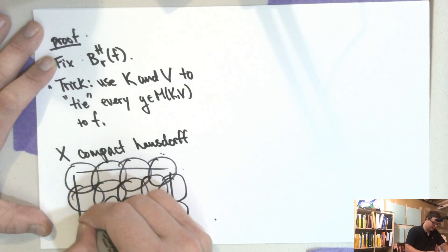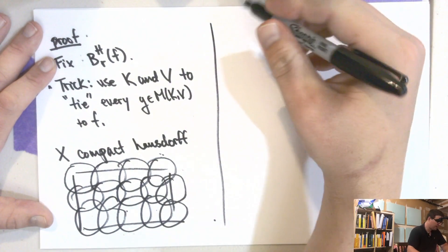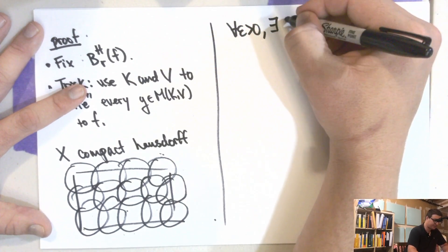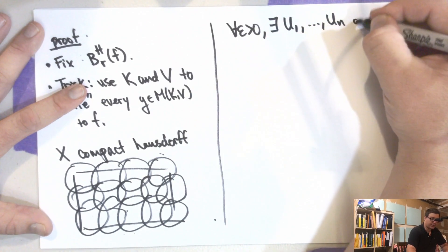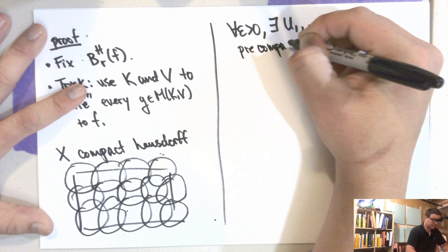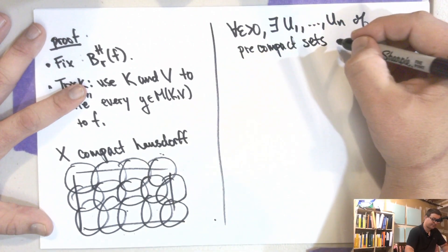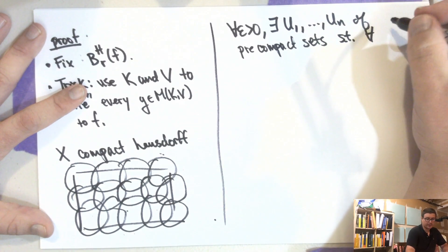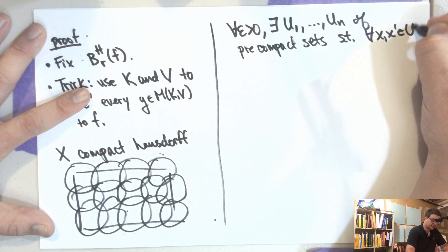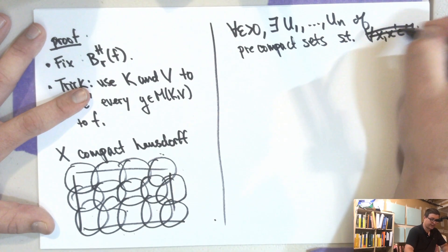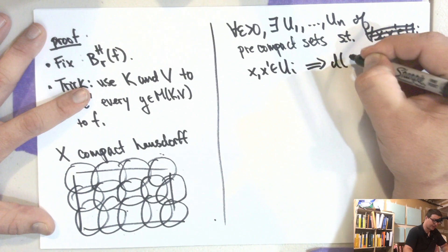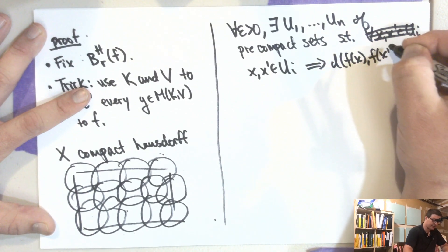So we cover X: for all epsilon greater than zero, there exists a finite cover of precompact sets, such that for all x, x' in U_i for some i — that is, if x and x' are in U_i for some i — this implies the distance between f(x) and f(x') is less than epsilon.